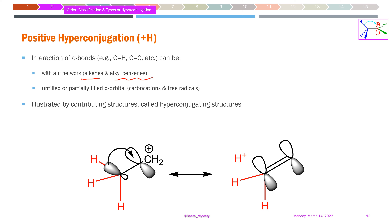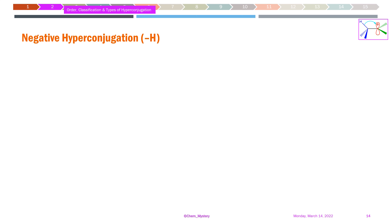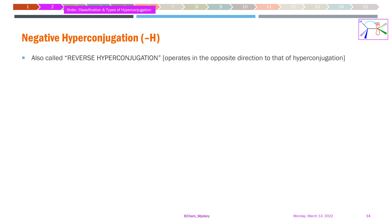In negative hyperconjugation, we need a group with electron-withdrawing tendency. This occurs in relatively polar bonds where the more electronegative atom is on the terminal side — such as C–Cl, C–O, or C–N bonds. These bonds have significant electron-withdrawing ability. When suitably situated adjacent systems are present, electrons can be pulled by anti-bonding molecular orbitals. This is also called reverse hyperconjugation, as it operates in the reverse direction to normal conjugation.